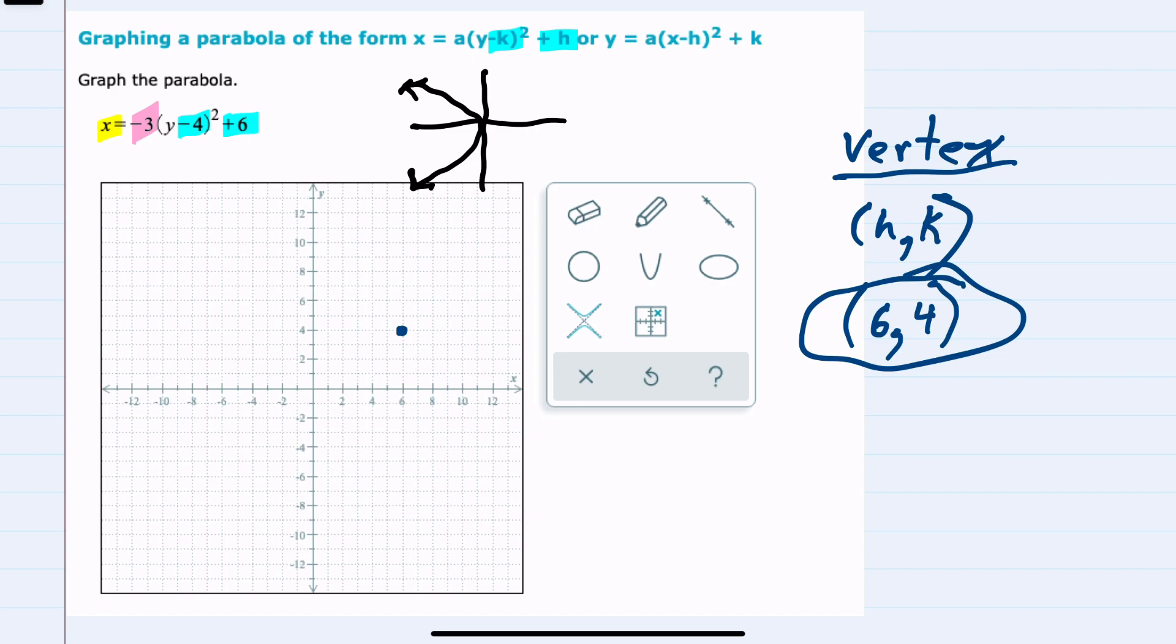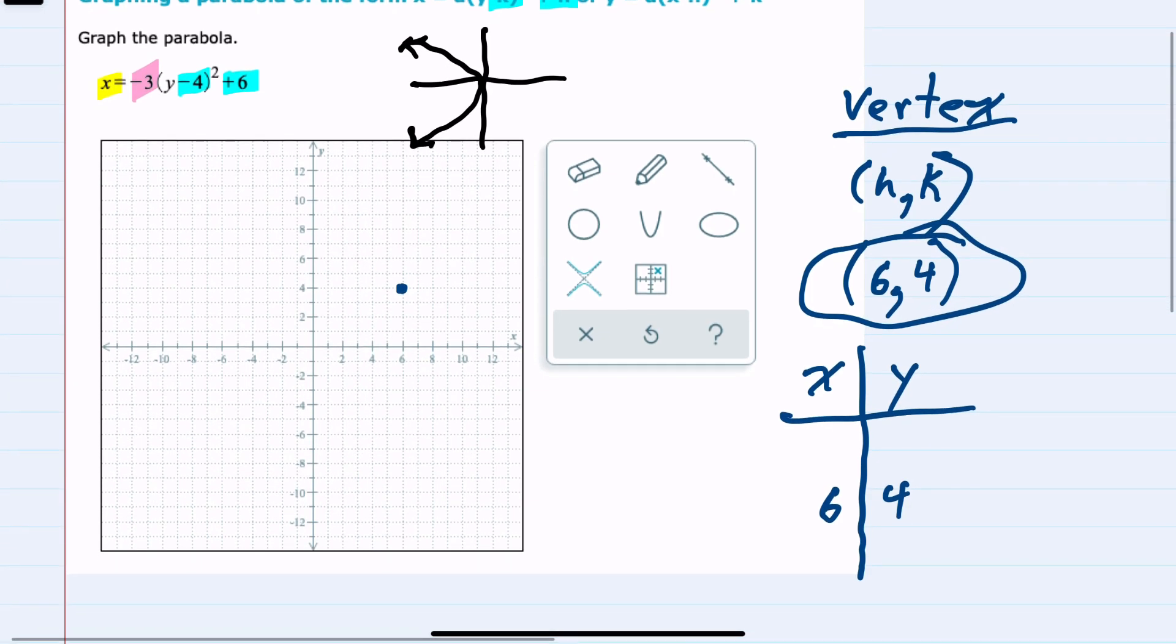And I know that it's going to have this left opening, but to get a sense of how large that opening is, I can plot a couple of points. I already have the point 6, 4, which is the vertex. But unlike most tables that we make this time, our x is the variable by itself. So we want to choose values for y to plug in. I already have a y equals 4. So I'm going to choose a couple of values to the left and to the right of 4. So I can choose 2 and 6 and substitute those values of y in to find the corresponding x values.